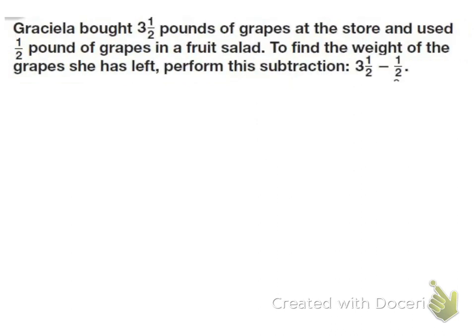Let's do one more. So Gracilia bought 3 and 1 half pounds of grapes at the store and used half a pound of grapes in a fruit salad. Find the weight of the grapes she has left. Perform the subtraction problem. So we're going to do 3 and 1 half minus 1 half. Again, since we subtract 1 half and 1 half, we end up with 0 halves, which is the same as 0. So we can just cross that off. So then 3 minus nothing is 3. So I find that I have 3 pounds left of grapes.